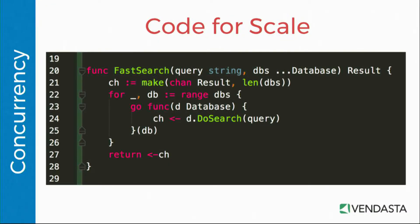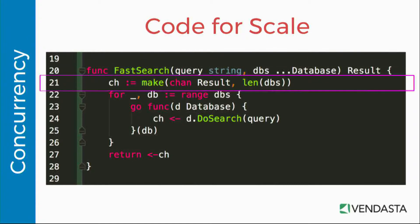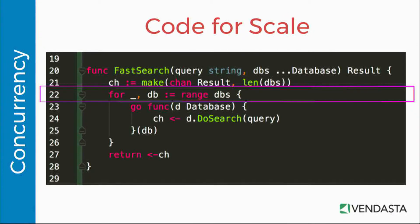So how do we code that? The first thing we do is change the name of our function to "fast search" — because it's fast. We pass in a query and any number of databases using the variadic argument syntax, the dot-dot-dot in Go. The result return variable stays the same. Inside the function, we define a channel, which is a communication mechanism between goroutines — think of it like a synchronized pipe or queue. We loop over all our databases, and for each one we run a function that calls doSearch on that database. Instead of returning the result directly, we write it to the channel. The important piece is the "go" keyword, which says: run this function as a goroutine — basically, I'm not going to wait for you, go do your thing.